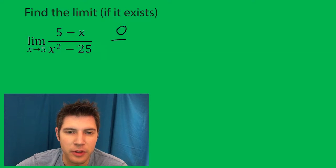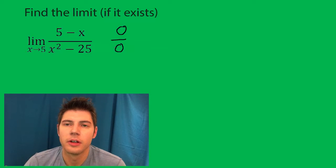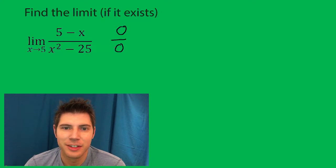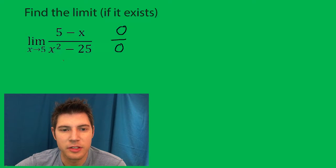over, and then 25 minus 25, we get 0 over 0. So that causes a problem, we can't do that, it's not determinable yet. So let's simplify.